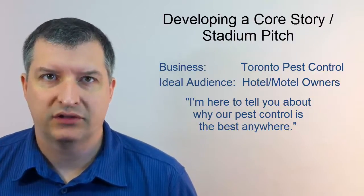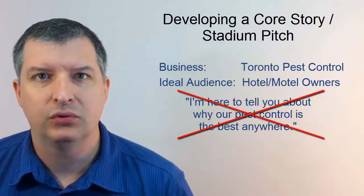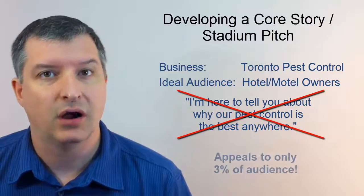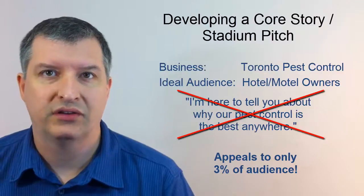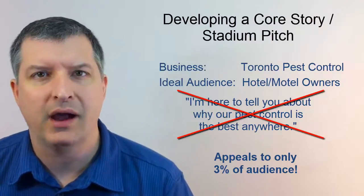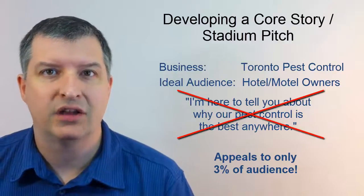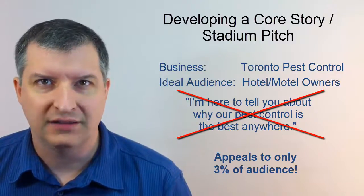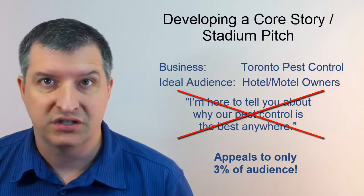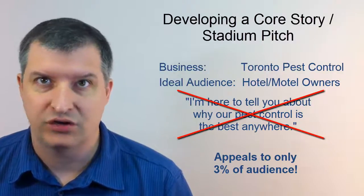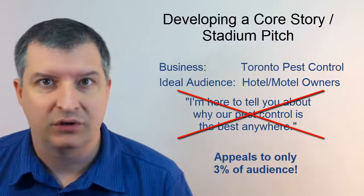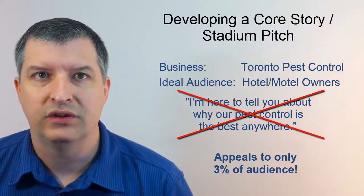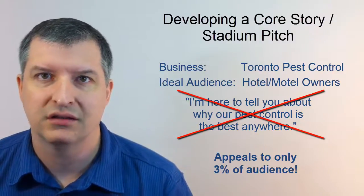This is a terrible example because it really only appeals to people who are ready to buy right now. As it turns out, that's only 3% of your audience. The next 3% to 6% are people that are thinking about it but not quite ready to buy yet, and the remaining 90% of the audience fall equally into three buckets: they're open to the idea but not buying right now, they're not interested, or in varying degrees of not interested at all. With a title like that, they would tune you right out.